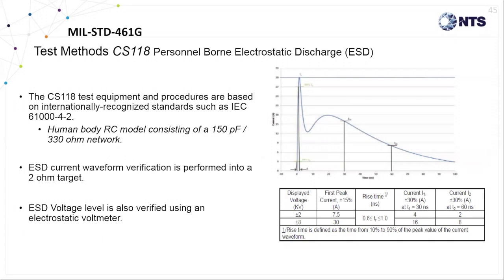The human body model ESD waveform consists of a 150 picofarad capacitor as well as a 330 ohm resistive network and has been derived from an internationally recognized standard such as IEC 61004-2. MIL-STD-461 requires that this waveform be calibrated prior to testing using a standard two-ohm coaxial resistive network to verify the waveform meets the particular rise time and the 30% tolerance criteria shown in this graph. The electrostatic voltmeter is also used to measure the peak ESD voltage level prior to the application.